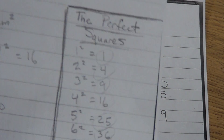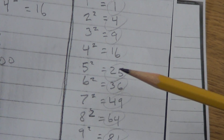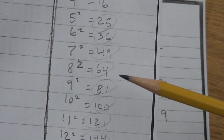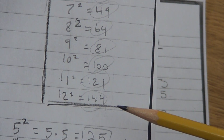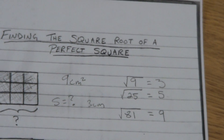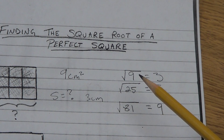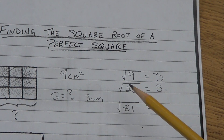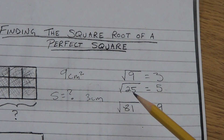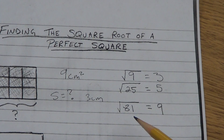Perfect squares were covered in the last video: 1, 4, 9, 16, 25, 36, and so on — they go on for a while. Now you're not always going to know the perfect square. You might know that 3 times 3 is 9, 5 times 5 is 25, and 9 times 9 is 81.